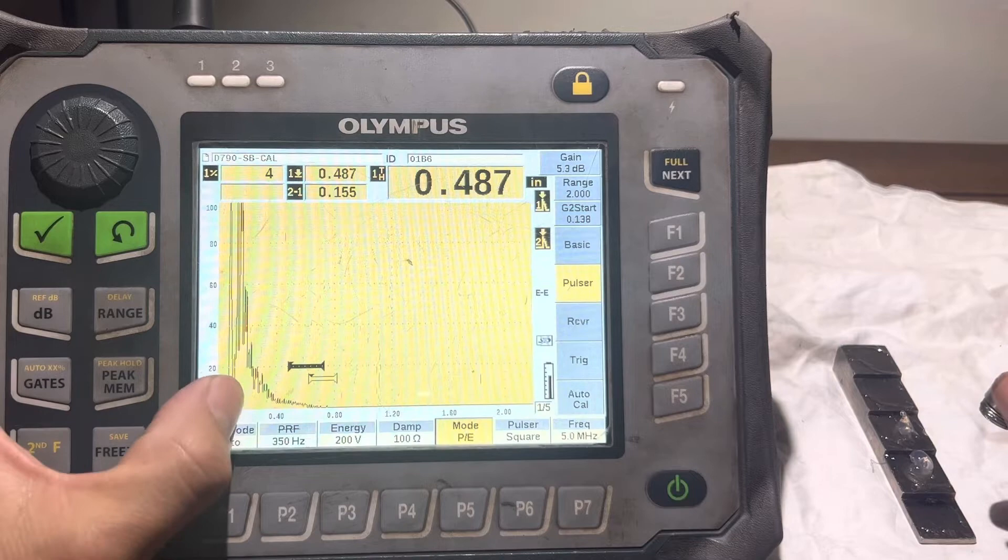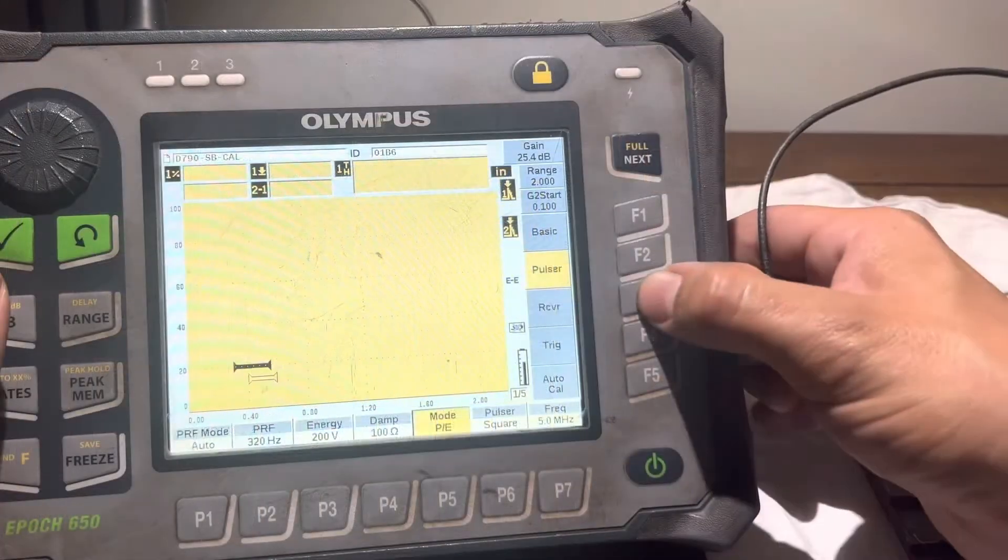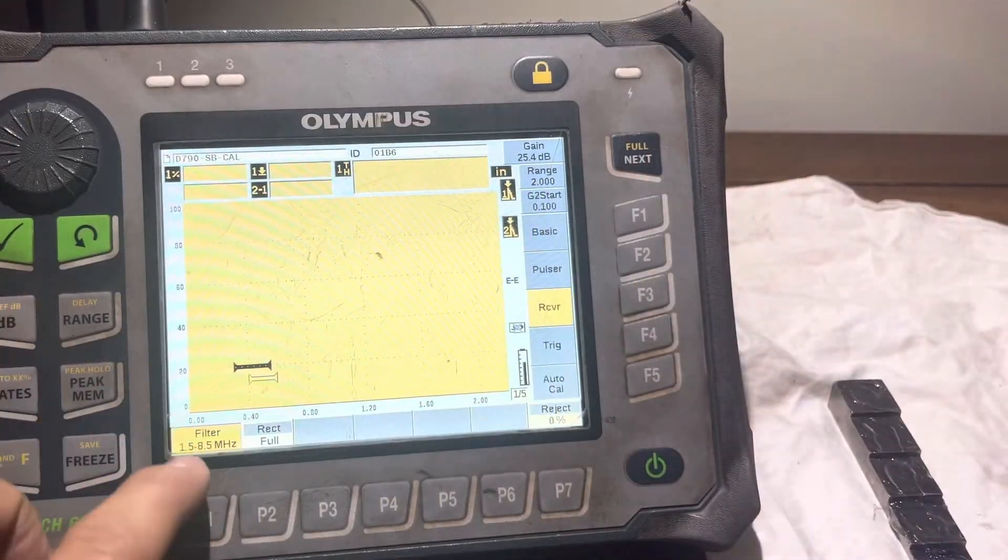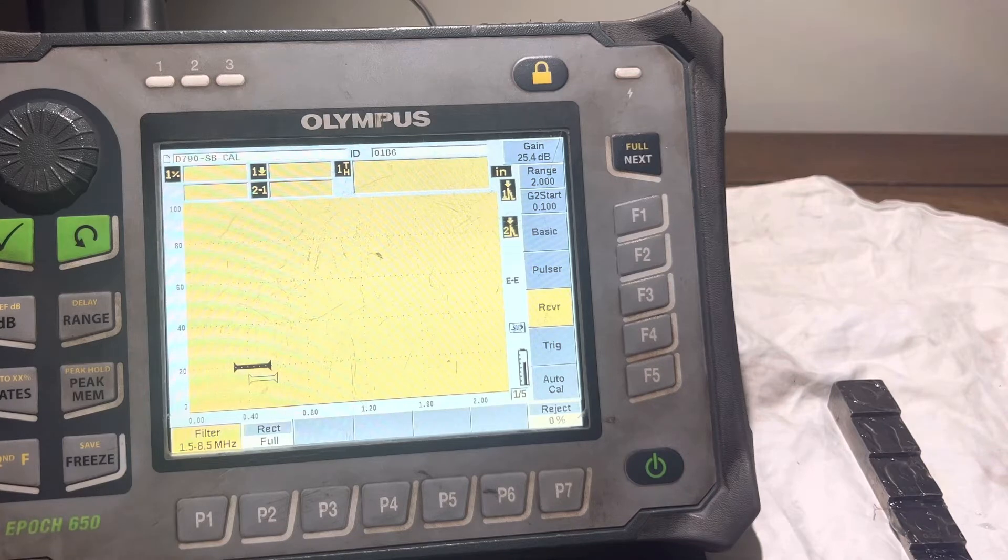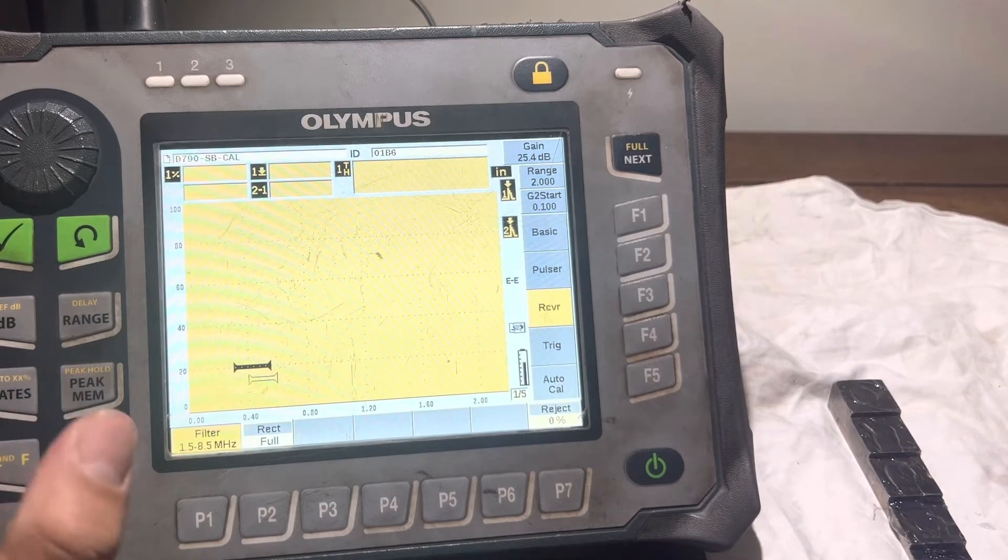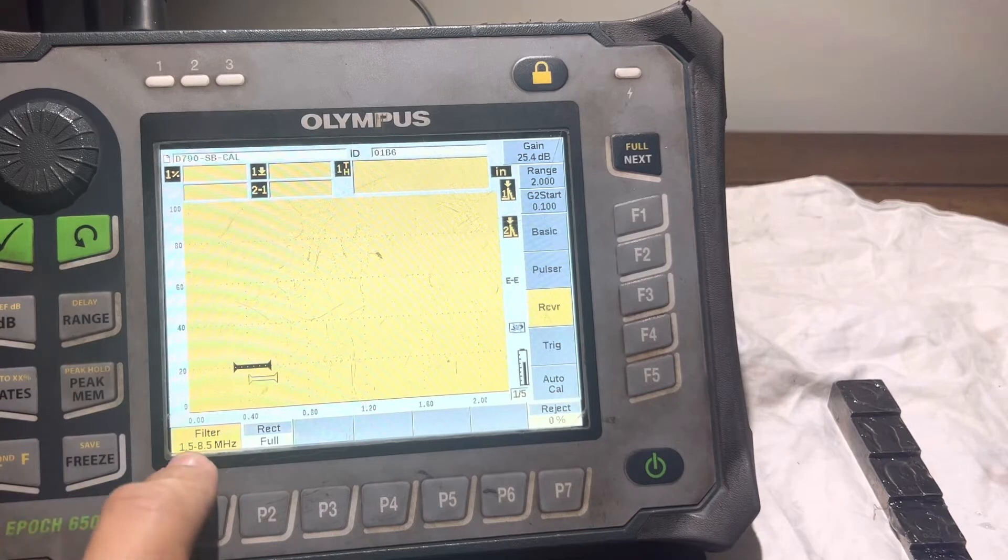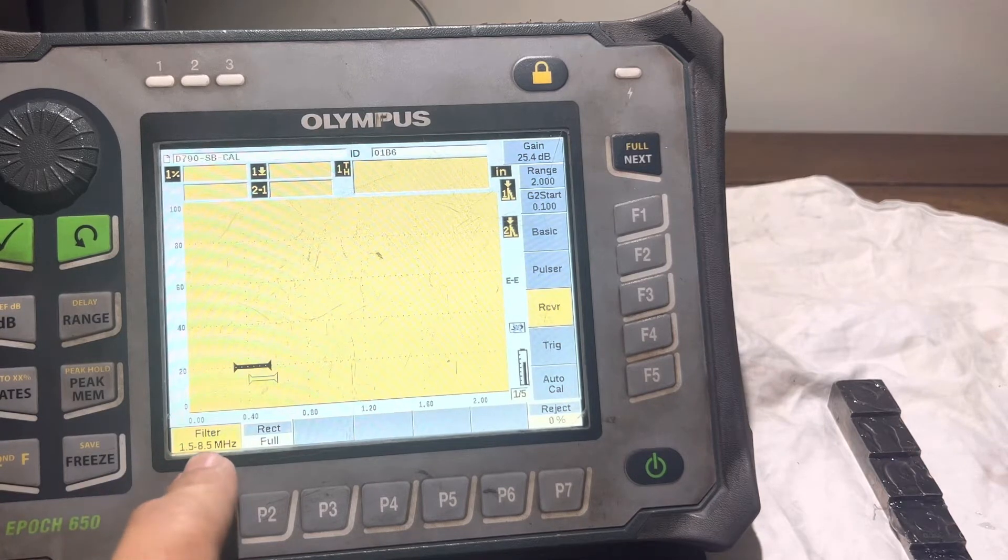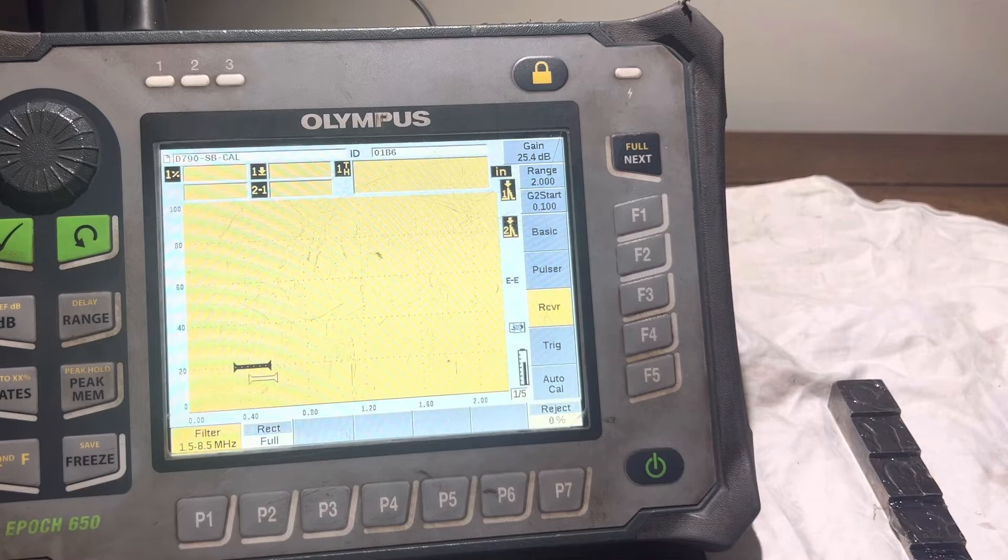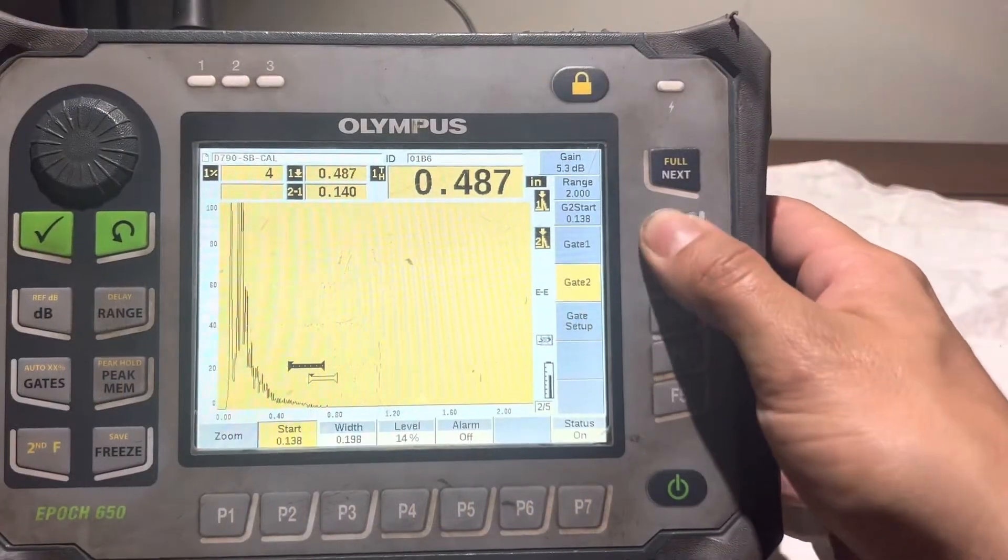As you can see, we have our main bang right there. Another thing, we want to make sure that our filter is within the range of the transducer that we're going to be using, which is 5 megahertz. In this case, we have a filter of 1.5 to 0.85, so we should be good.